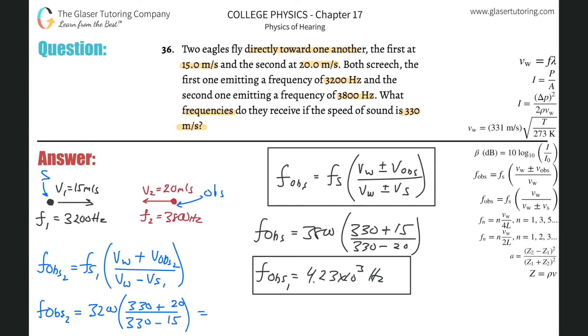And voila, let's calculate. So this is 3200 times in parentheses 330 plus 20, divided by then 330 minus 15. And we get a value of about 3.56 considering rounding times 10 to the third hertz. And that's the frequency now that the second bird will be observing of the sound that the first bird is producing.